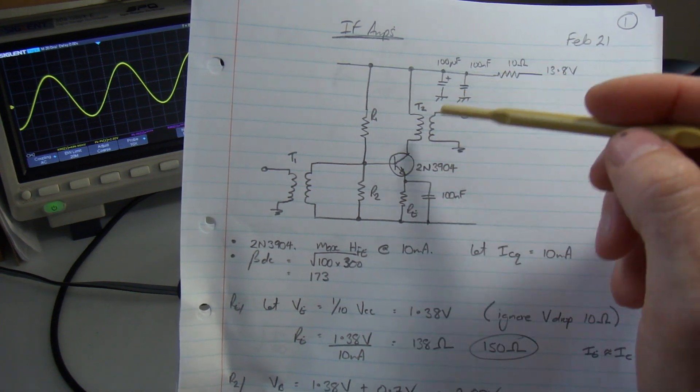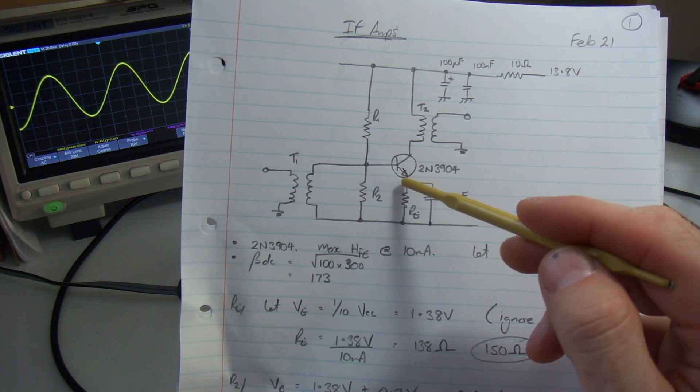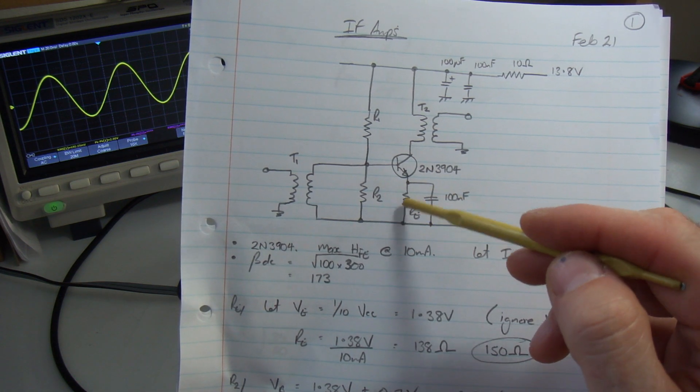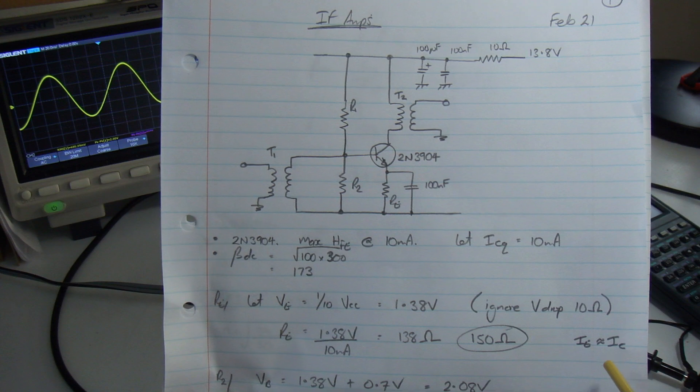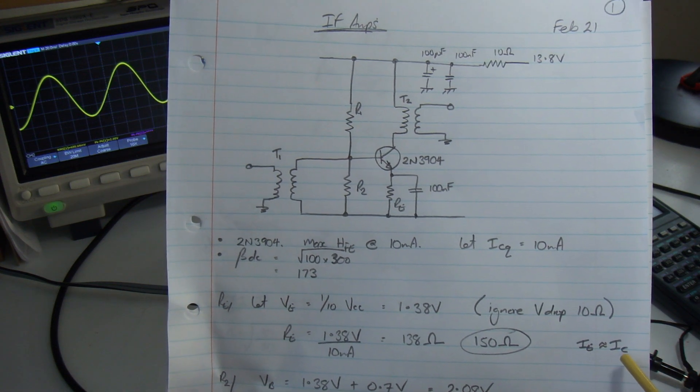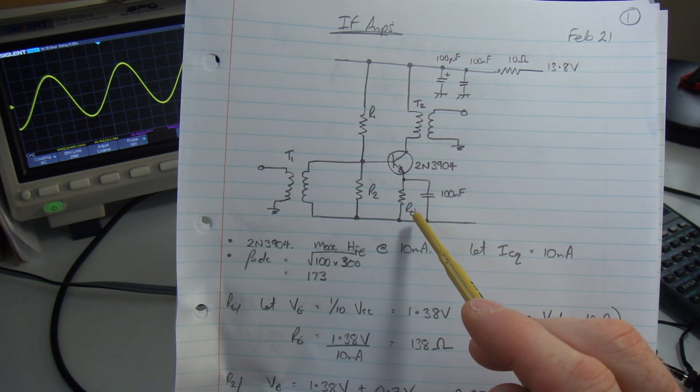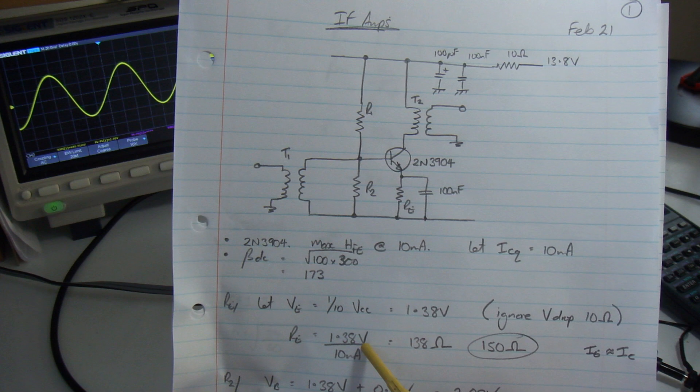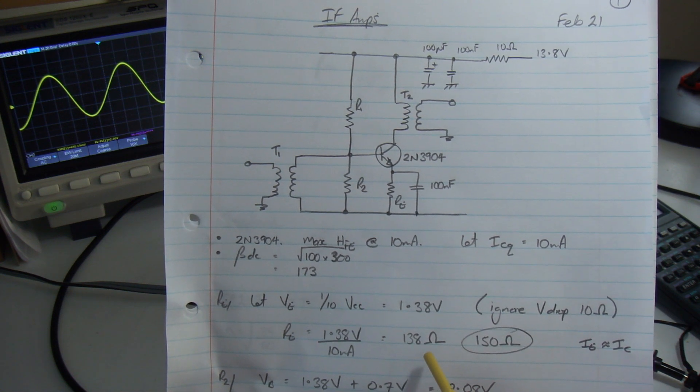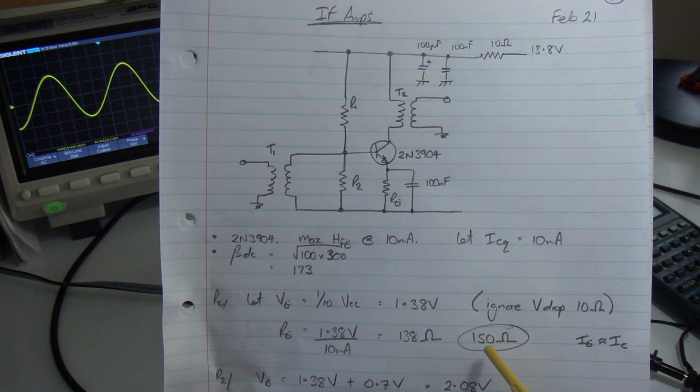The collector current of 10 milliamps is essentially the same as the emitter current. So if the voltage across that and the current through it, I should be able to work out the resistance. 1.38 volts divided by 10 milliamps comes out at 138 ohms, and the nearest standard value is 150 ohms.